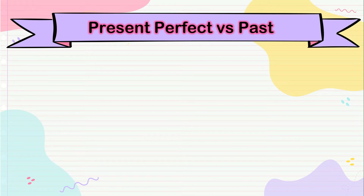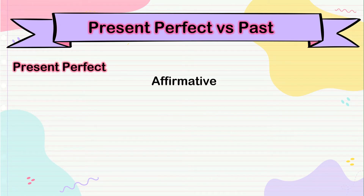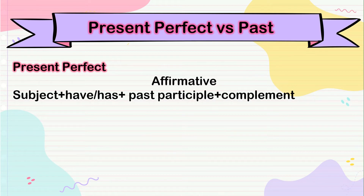So let's review the structure of present perfect. In affirmative form we have: subject plus have or has — depending on the pronoun you are going to use — plus the past participle plus the complement.